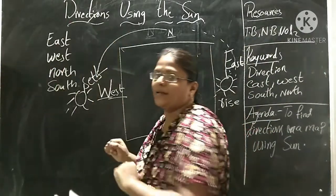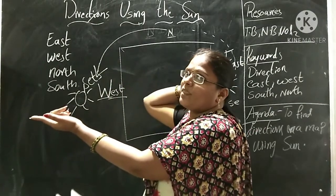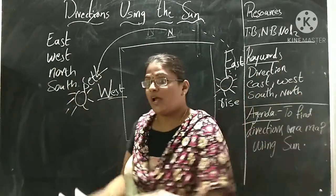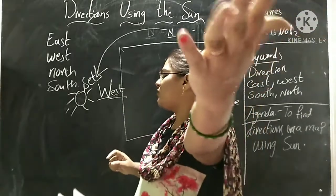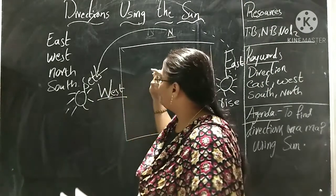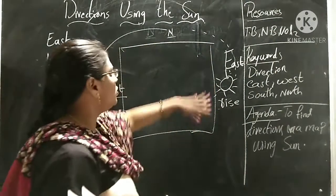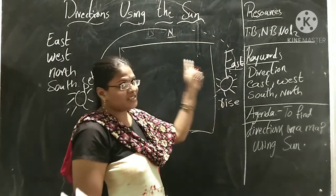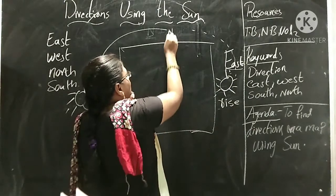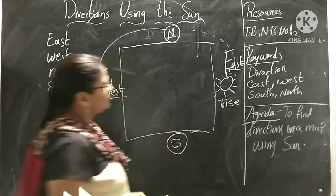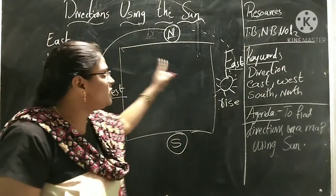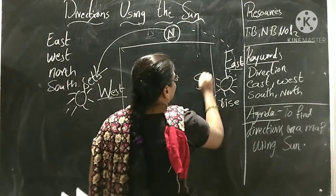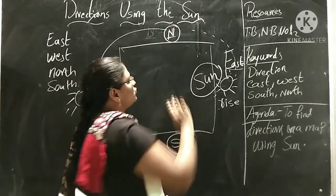So: facing the sun is East, my back is West, my left hand is North, and my right hand is South. If the sun is on this side, this is East. Opposite to East is always West — rises in the East, sets in the West. Left hand: North. Right hand: South. Now we have come to know about East, West, North, and South — these are the directions we can find by using the sun.